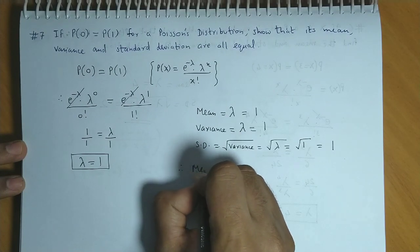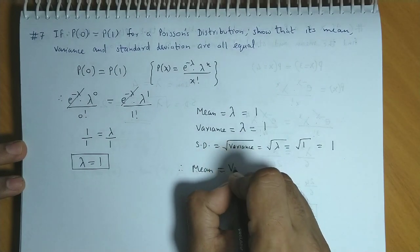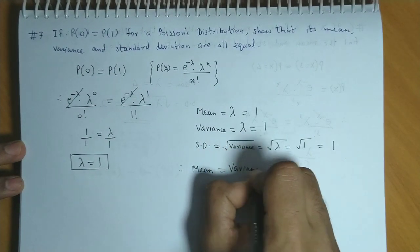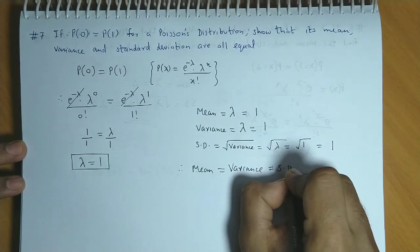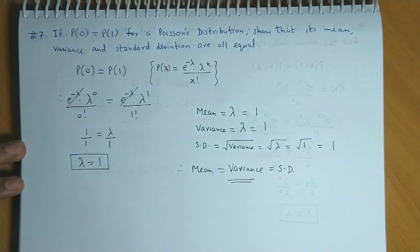So, hence, we could conclude that mean is equal to the variance is equal to the standard deviation.